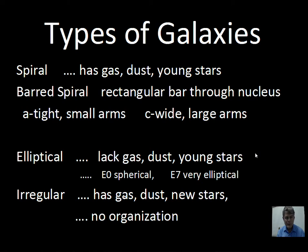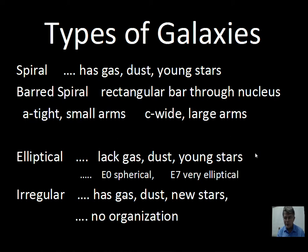Then the irregular galaxies — they don't have a real class to them, they don't have a lot of organization. They're just kind of a turbulent look to them. Here again we do have gas and dust, and we have new stars being formed in the irregulars.